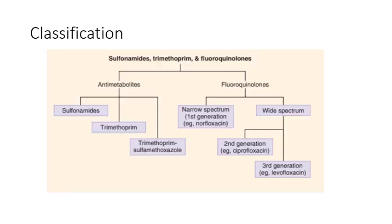Moving on to the classification of sulfonamides, trimethoprim, and fluoroquinolones. The first group is antimetabolites, which include sulfonamides and trimethoprim and their combination. The second group is fluoroquinolones. They have two types of spectrums: narrow spectrum and wide spectrum. Under the narrow spectrum falls the first generation — norfloxacin. Under the wide spectrum, there are second and third generations. Second generation includes the commonly used drug ciprofloxacin, and third generation includes levofloxacin.